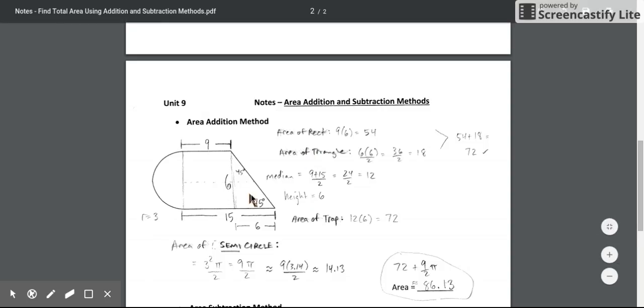We also have enough information now to find the area of the triangle. Base times height divided by 2. So we can do 6 times 6 divided by 2, which gives us an area of 18.